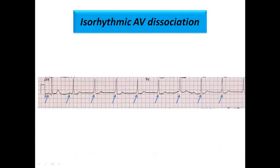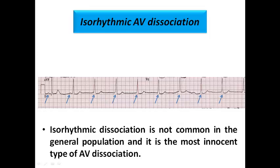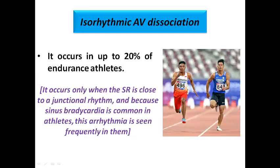In this example, the P-wave appears before the complex in the first and second beats; in the third beat it is slightly fused with the complex; in the fourth through seventh beats the P-waves are slightly within the complex. Isorhythmic AV dissociation is not common in the general population, but it occurs in up to 20% of endurance athletes due to their high vagal tone, making it a benign finding in that context.